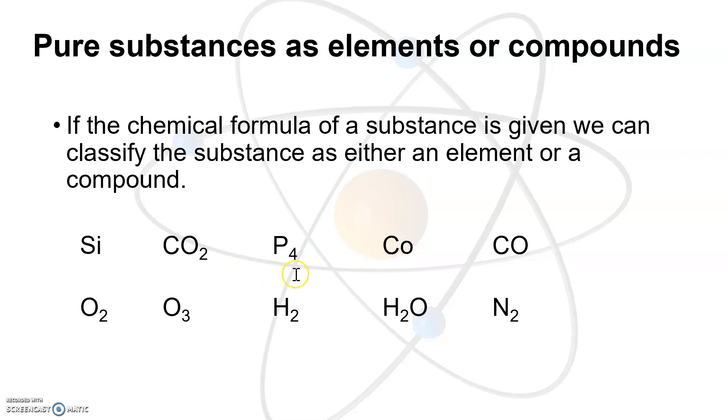Moving on to the right, we have P4, the capital P, so that's phosphorus, and the four means there are four of them together. So there's four atoms of phosphorus bonded together. So this is still considered an element. Even though there's four atoms, it's the same type of atom, so it's an element. And the next two are kind of interesting because they're both CO. Capital C, lowercase o, means it is the element cobalt. Capital C, capital O, means it's the compound carbon monoxide, one carbon to one oxygen. Bottom row has some interesting things that we want to point out. So we have O2, H2, N2. These are called diatomic elements. It's still an element because it's just the same thing. So nitrogen, we have two atoms of nitrogen bonded together, and it's the element nitrogen.